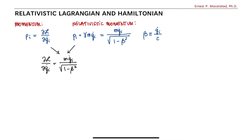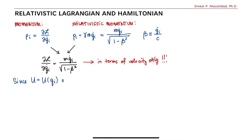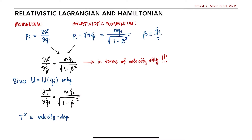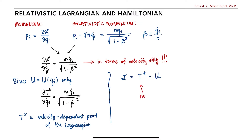Notice that this equation is in terms of velocity only. Because the potential energy depends only on position and not on velocity, we can validly write this equation as the partial derivative of t-star with respect to qi-dot equals m times qi-dot over the square root of 1 minus beta squared. Here, we define t-star as a function that depends on velocity and is part of the Lagrangian. So we can rewrite the Lagrangian as the sum of the velocity-dependent function and the position-dependent function: L equals t-star minus U. As you will see in a bit, t-star will not be the same as the relativistic kinetic energy.